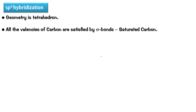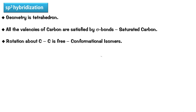Rotation about a single bond carbon is free and this leads to what we call conformational isomers. We are going to do the details of isomers in the specific lesson when we deal with isomers, but here I just want to make a point that isomers are basically two different compounds having the same molecular formula. The difference in those compounds can arise due to any parameters - it could be as simple as the free energy of the molecules.